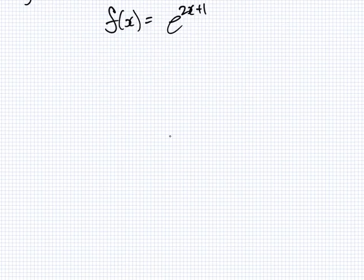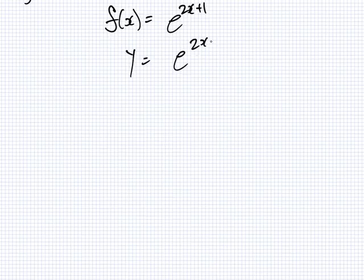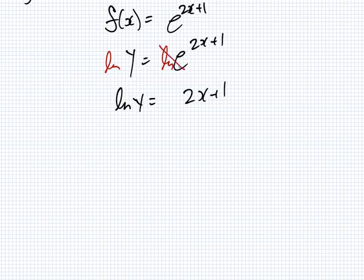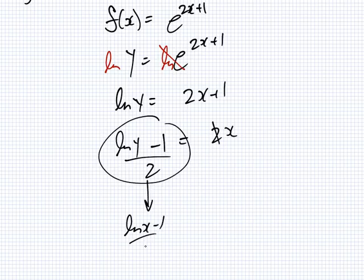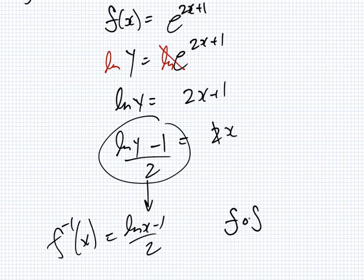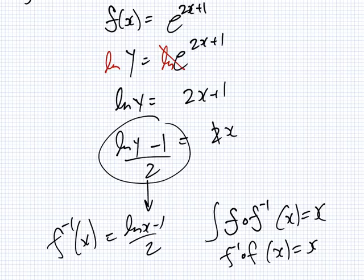Now the second method. We have y equals e^(2x+1). To get the x, I take log of both sides: log y equals 2x plus 1, because log and e cancel. What's next? log y minus 1 equals 2x. And finally divide by 2, then replace y with x: (log x minus 1) over 2. That's the inverse - same answer as before. You could test it out if you wanted to check that F∘F⁻¹ and F⁻¹∘F both equal x.